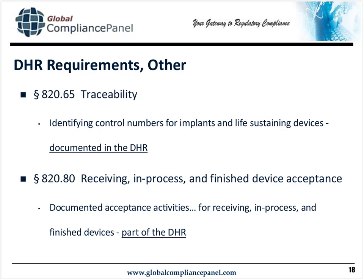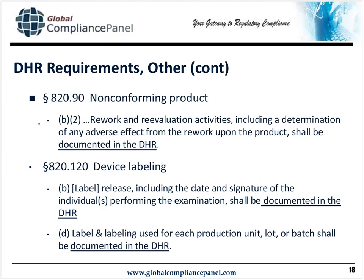A couple of other DHR requirements: under 820-65 traceability, if you have an implant or life-sustaining device, you must document control numbers in the DHR. Under 820-80, receiving and acceptance activities must be part of the DHR. Under 820-90, any rework and reevaluation of product — including a determination of any adverse effect from the rework — must be in the DHR. Label release must also be documented, and each label and labeling must be documented in the DHR.